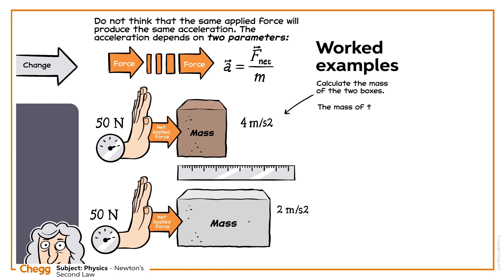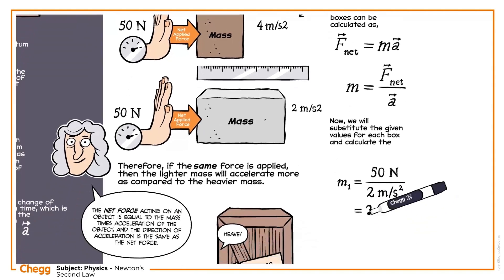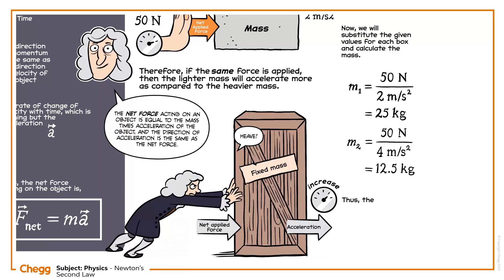The mass of the two boxes can be calculated as m = F/a. Now we will substitute the given values for each box and calculate the mass. Thus, the box with more acceleration has less mass as compared to the box with less acceleration.